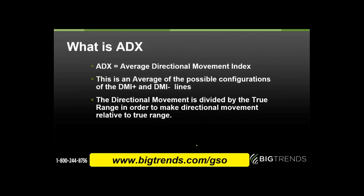ADX was developed by Wells Wilder — the same person who developed the RSI, the Relative Strength Index. Wilder said we want to look at the typical directional movement lines: DMI-plus for positive directional movement, which tells you how many new highs you're making over a look-back period, and DMI-minus, which tells you how many new lows. When you take DMI and divide it by the true range — which factors in not just highs and lows but also gaps — that tells you how much real directional movement you're getting compared to typical total movement. It's like a percentile of how much the stock is trending.